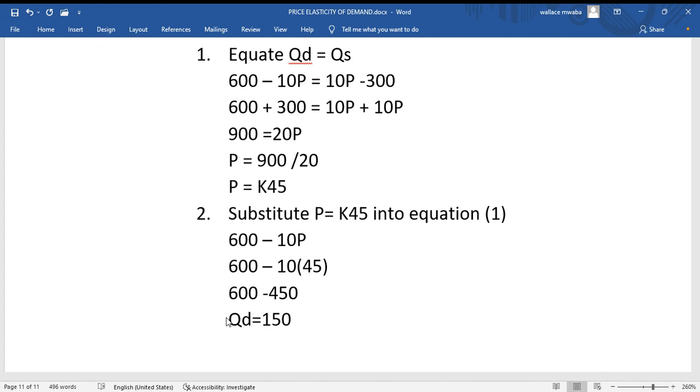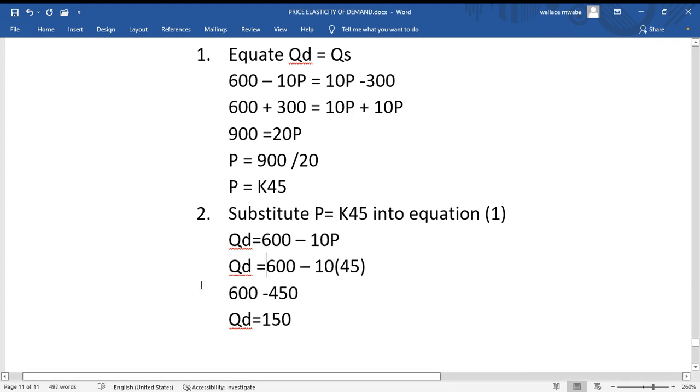So this is the value of Qd. That's the value of Qd, so that's our equilibrium quantity: 150 units. And that's all that you need to do.